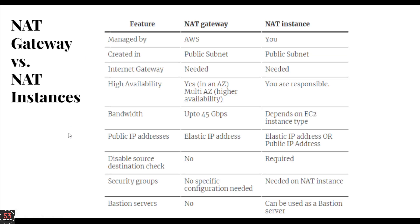Now let's talk about the differences between NAT gateway and NAT instances. Both work similarly but there are some differences. First, the 'managed by' feature: NAT gateway is managed by AWS, whereas a NAT instance is managed by the user who created it. Next, 'created in': NAT gateway is created in the public subnet, and NAT instance is also created in the public subnet.